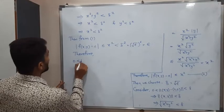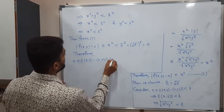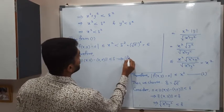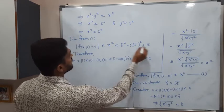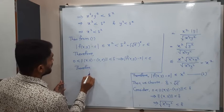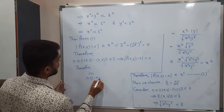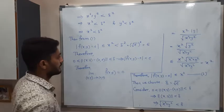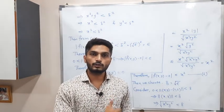Therefore, we conclude: starting from zero less than norm of (x,y) minus (0,0) less than delta, we finally get |f(x,y) - 0| less than epsilon. Therefore, the limit as (x,y) tends to (0,0) of f(x,y) is equal to zero. In this way we have proved the result.